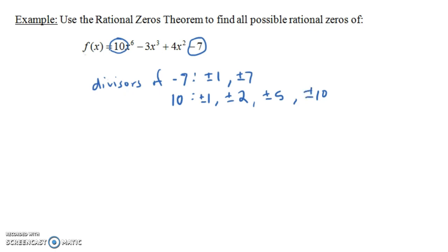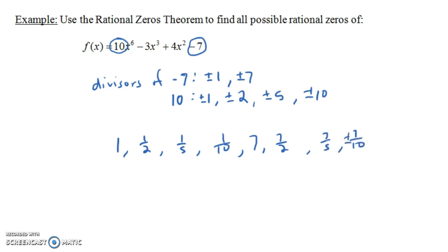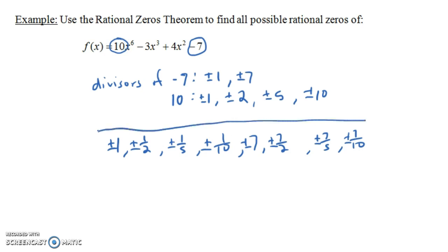So what are the possible rational zeros of this function? The only possible values would be: 1 over 1 (which is 1), 1 over 2 (one-half), 1 over 5, and 1 over 10. And then 7 over 1 (which is 7), 7 over 2, 7 over 5, and 7 over 10 — with plus and minus on each. So there are a lot of possibilities. But this is still helpful — for example, you might wonder if 4 is a zero of this polynomial. You know right away it's not, because 4 cannot be written as a divisor of negative 7 divided by a divisor of 10. These are the possible rational zeros of that function.